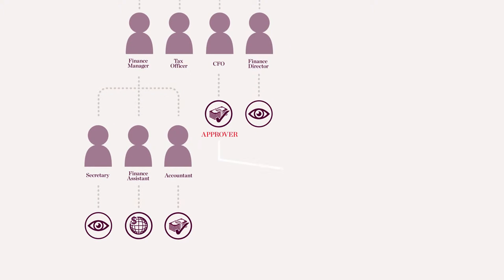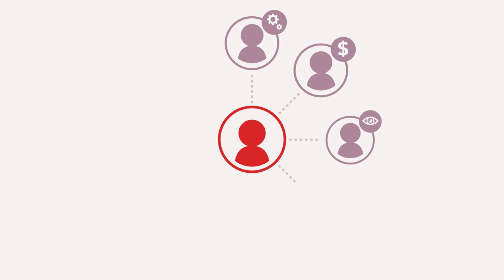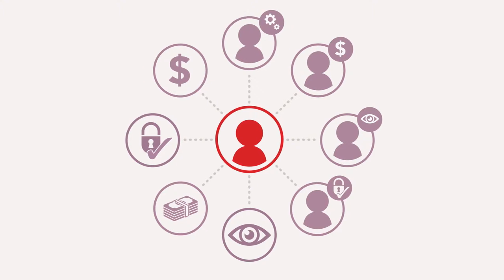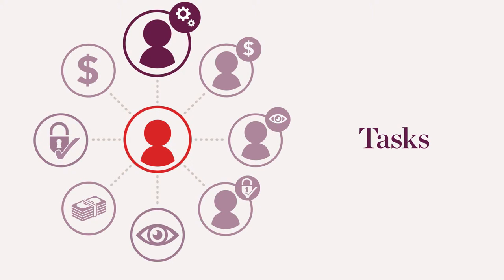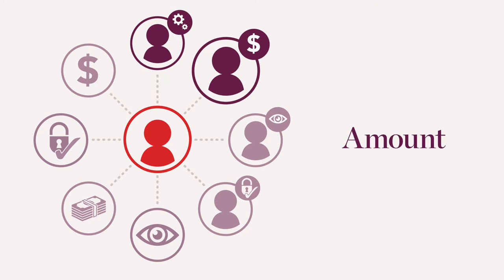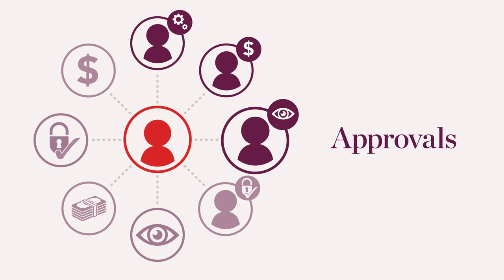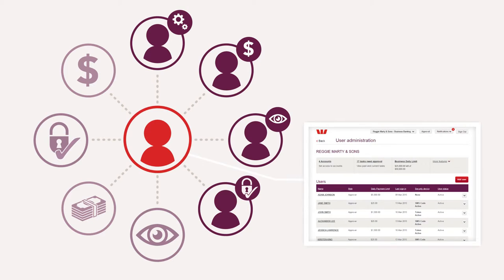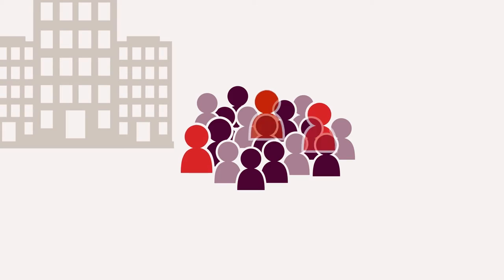For additional security, you can specify how many people need to approve certain payments. You'll need at least one person in your business to act as an administrator. The administrator has control of setting up who has access to Westpac Live and what tasks they can do, the amount of money that can be transacted in a day through payment limits, setting the number of people required to approve payments, and managing security devices — all of which can be managed immediately in Westpac Live. As your business grows, you can set up multiple administrators.